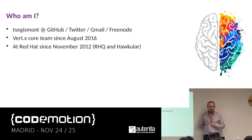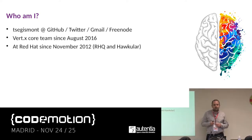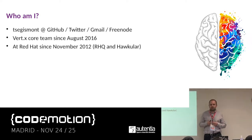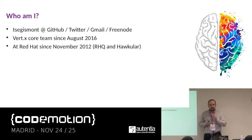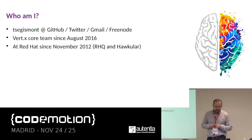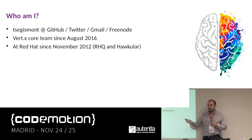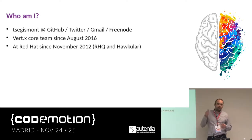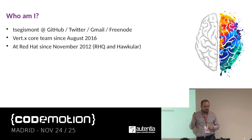Before we start: I am Thomas Ségisment. I live in France, in Marseille. I work for Red Hat since 2012 — my day job is basically being paid to contribute to open source, which is cool. Before I joined the Vert.x team in August 2016, I was working on the Ocular project, a time series database. If you have questions after the talk, you can ping me on GitHub, Gmail, Freenode, or Twitter — I always use the same nickname.